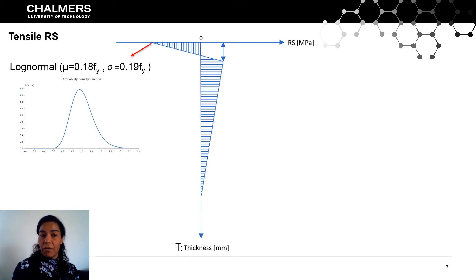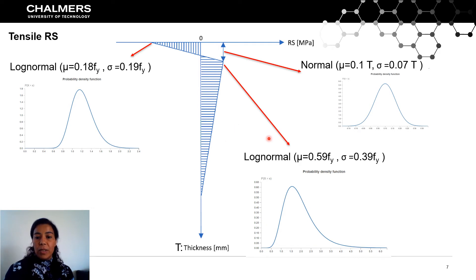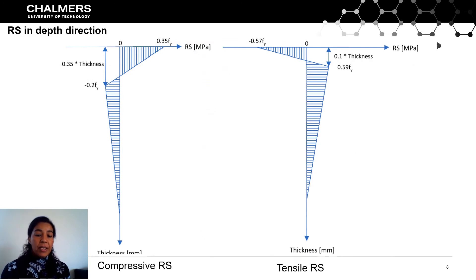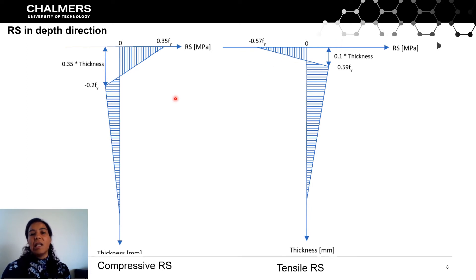The same work was done for the case where we have tensile residual stress at the surface. Using the collected data, we characterized the three parameters to define the shape of the residual stresses. These shapes are defined regardless of the yield strength of the material and regardless of the plate thickness t. The following figure summarizes both cases — tensile and compressive residual stress at the surface — where the values shown are the mean of the characterized distributions, fy is the yield strength of the material, and t is the plate thickness.